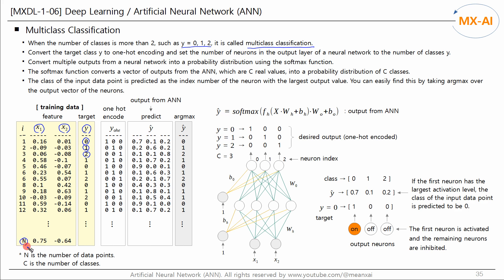N is the number of data points and C is the number of classes. In multi-class classification, the target Y is converted to a one-hot encoding. These are what we want to output from a neural network, so three neurons are needed in the output layer. Each neuron outputs each element of the one-hot encoding.